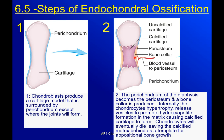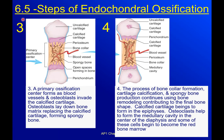Chondrocytes will eventually die leaving calcified matrix behind as a template for appositional bone growth. Appositional simply means new growth on top of old growth — new bone is made on top of the old cartilage model that was left behind. Step three: the primary ossification center forms as blood vessels and osteoblasts invade the calcified cartilage.